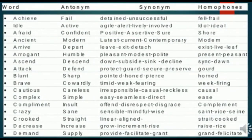I have done this exercise on this slide. What I have done is I have put a word: achieve, idle, afraid, ancient, arrive, arrogant — likewise from A to B to C and D and so on. You can go to Z till the exercise does not meet Z.